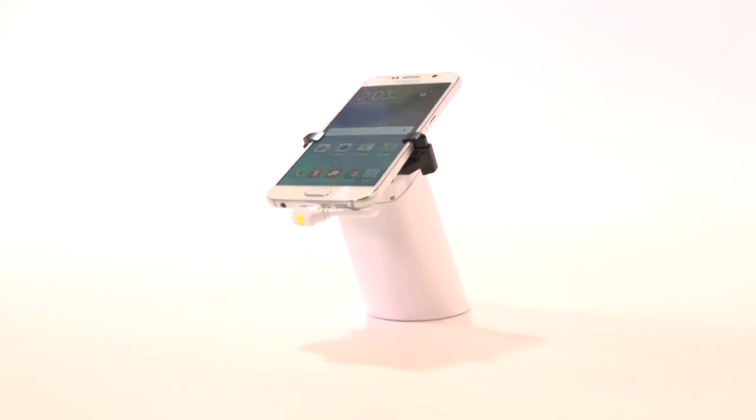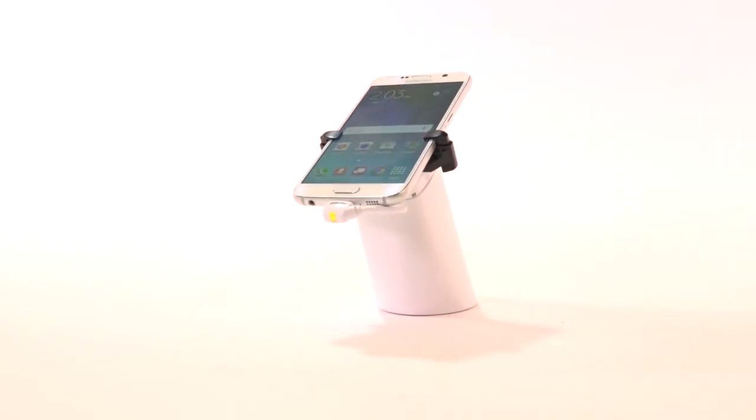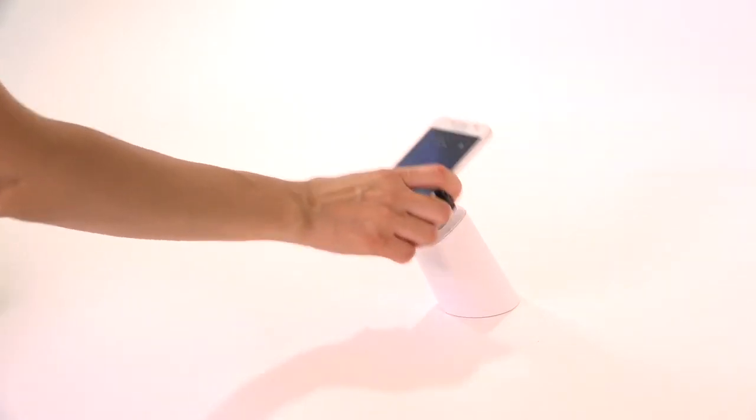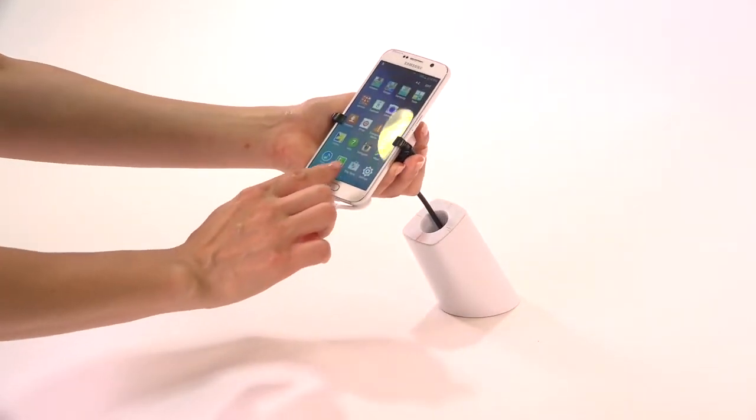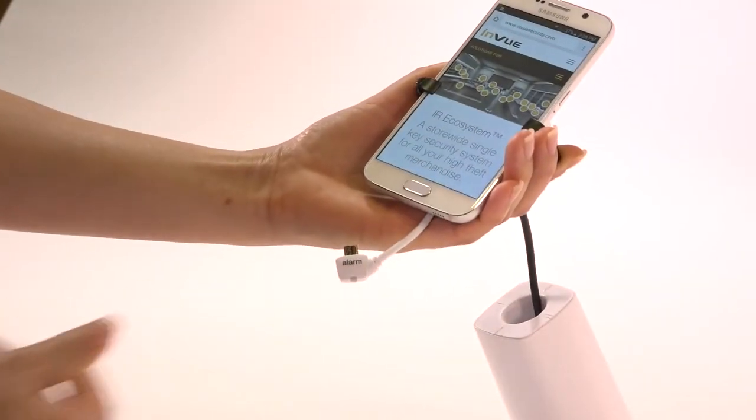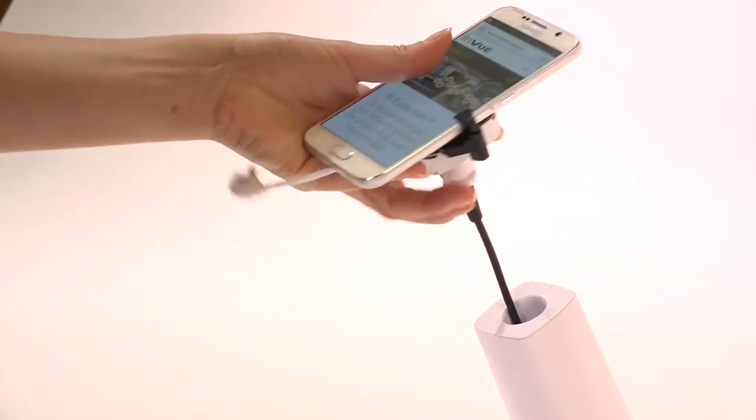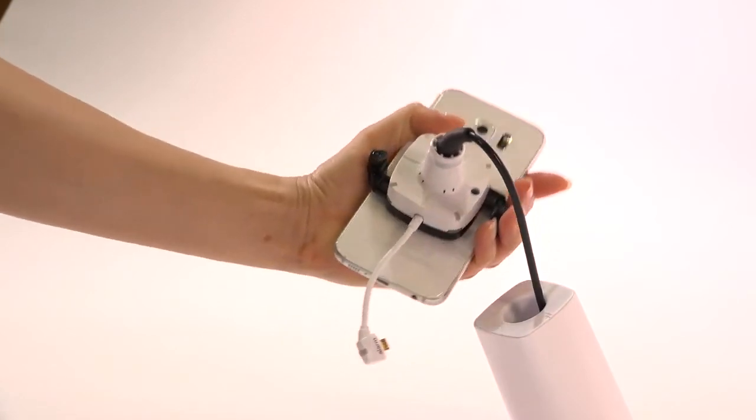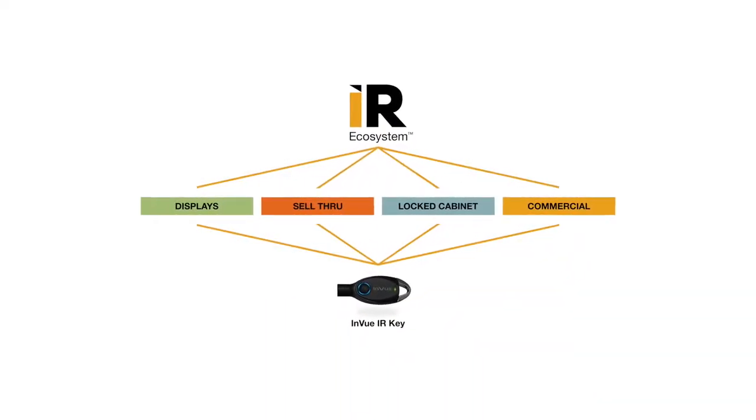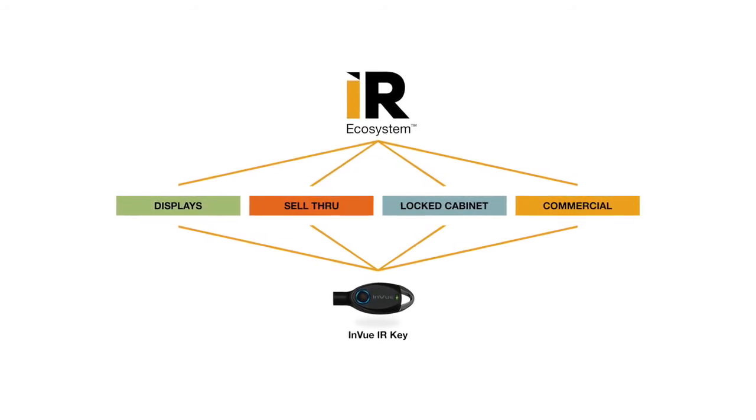The HS150 delivers high security that is easy to use and easy to install. The hidden cable design has our true feel tether that enables easy lift. The HS150 comes with alarm on merchandise and optional lockdown to deter theft. The HS150 is part of the IR ecosystem, a single key security solution that protects high theft merchandise.